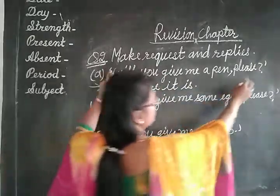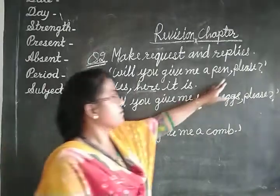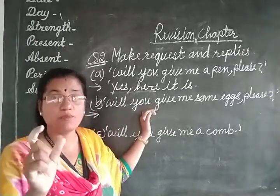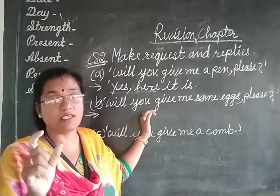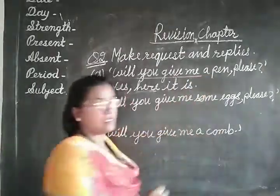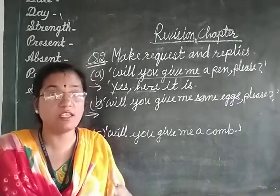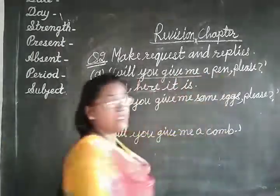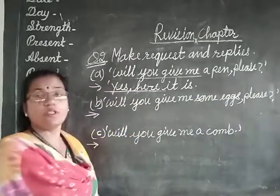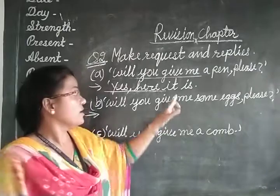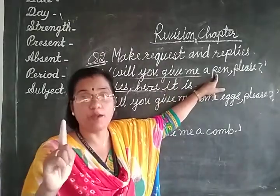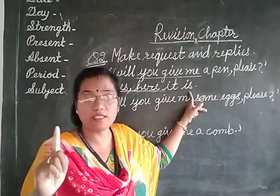Look here children — this sentence is between inverted commas. After 'pen' there is a comma. Now, for all the sentences, whatever word is given to make the question, we will use the same structure: 'Will you give me...' Here we are asking for a pen. So: 'Will you give me a pen please?' And the reply is 'Yes, here it is.' In all answers we write 'yes.' The pronoun is 'it' and the helping verb is 'is' because the person is asking for one pen — singular.